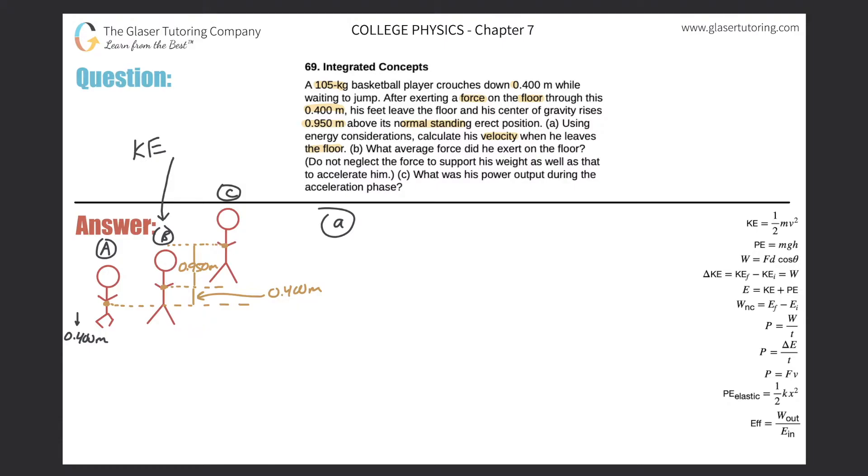He also has a little potential energy if I frame the problem from A to B because his height did increase there by 0.4. But in terms of my frame from looking at point B to point C, he has all kinetic energy at this particular point.